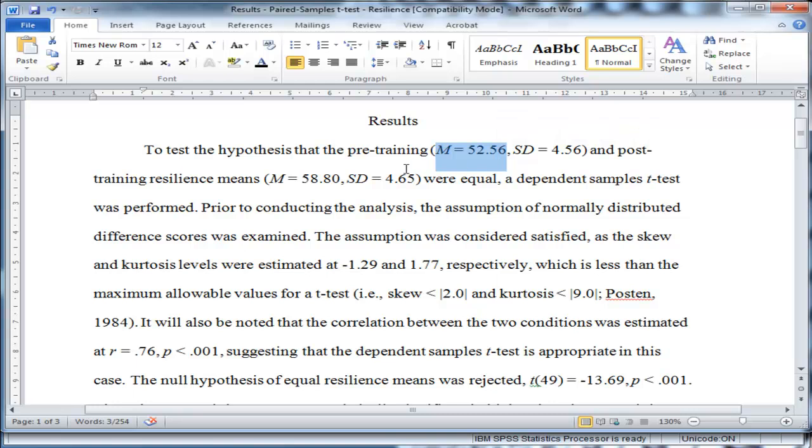Now in this case, the mean for the pre-training condition was 52.56, and mean is represented as M and it's italicized. Now I'll note, these results were written up consistent with American Psychological Association style, but I think the structure, irrespective of the style that you're using, the structure would be the same, you just might have to change some symbols.